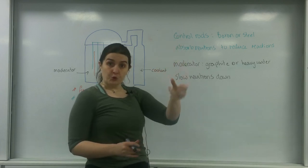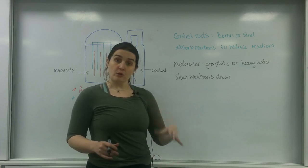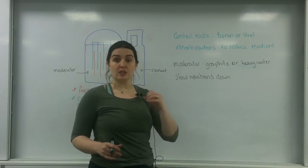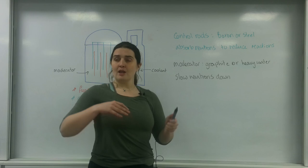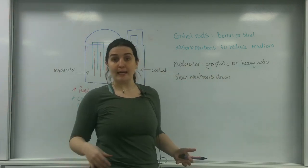So graphite or heavy water slows the neutron down. The control rod absorbs the neutrons so there aren't any in the first place to decay. The moderator controls it. They slow it down so you don't have this idea of all these neutrons scattering all over the place really quickly.